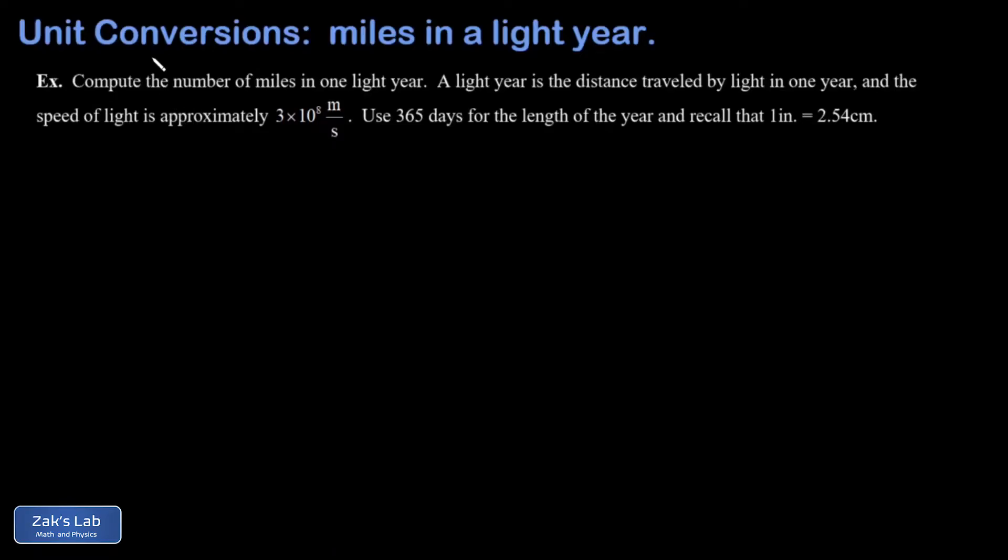In this video we're tackling a pretty serious unit analysis problem. We're asked to get the number of miles in one light year. We're told the light year is the distance traveled by light in one year, and we're told the speed of light is approximately 3 times 10 to the 8th meters per second.